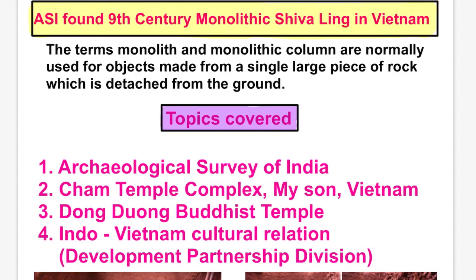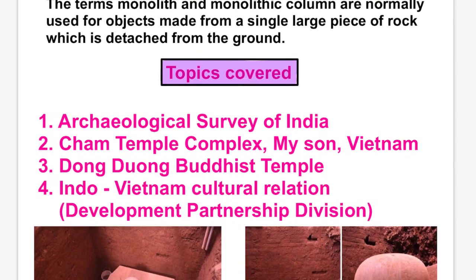The Archaeological Survey of India found a 9th century monolithic Shivalinga in Vietnam. We first need to understand what the term 'monolithic' signifies here. The term monolith or monolithic column is normally used for objects that are made from a single large piece of rock which is detached from the ground.